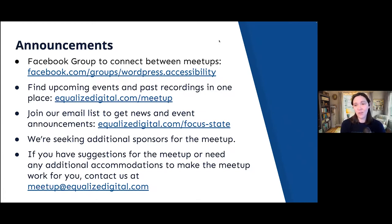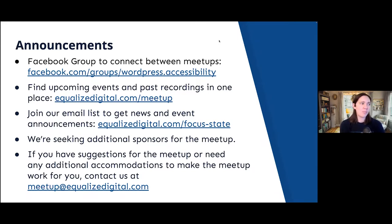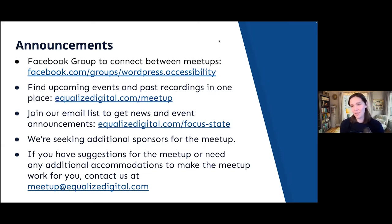If you have suggestions for how we can make this meetup work better for you, or any topics you'd like to see, or if you're interested in speaking — we are looking for speakers starting in May — please contact me. You can email meetup@equalizeddigital.com. We'd love to hear suggestions or have you speak, or find a speaker for a topic you think we should cover.